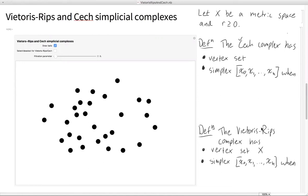Hello, everybody. I'm Henry Adams from Colorado State University. Today, I'd like to give an introduction to Vietoris-Rips and Čech simplicial complexes, and in particular, what is the difference between them?